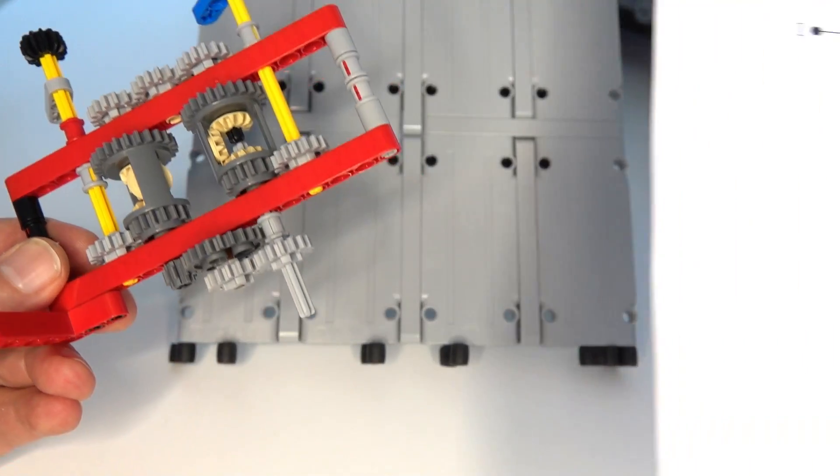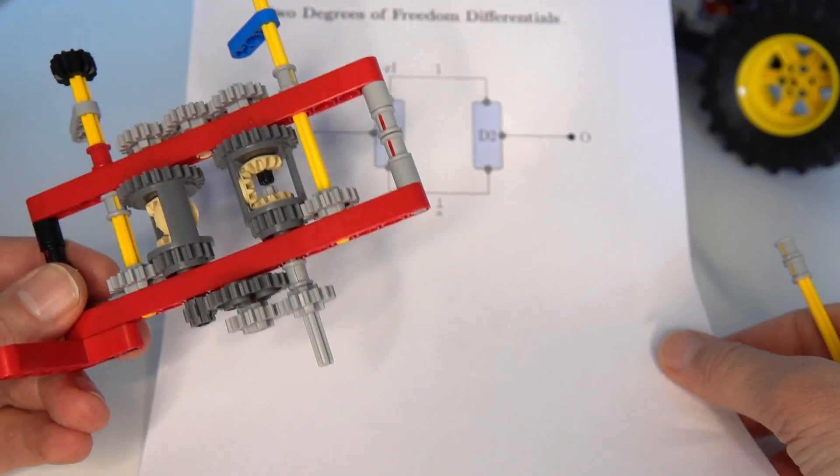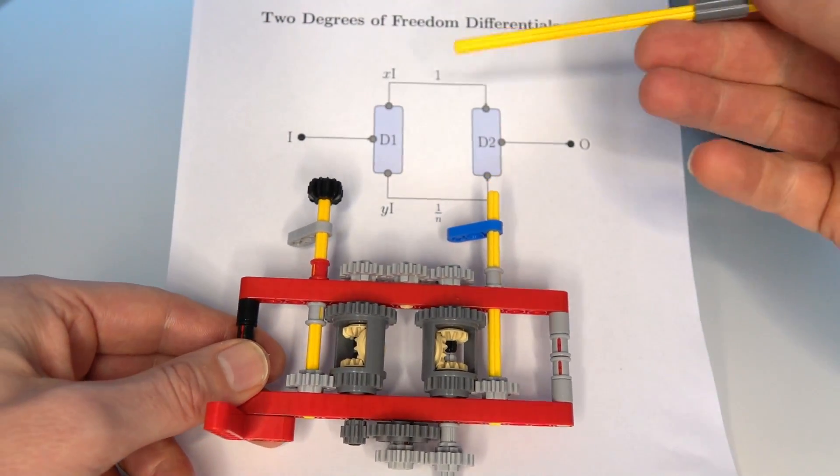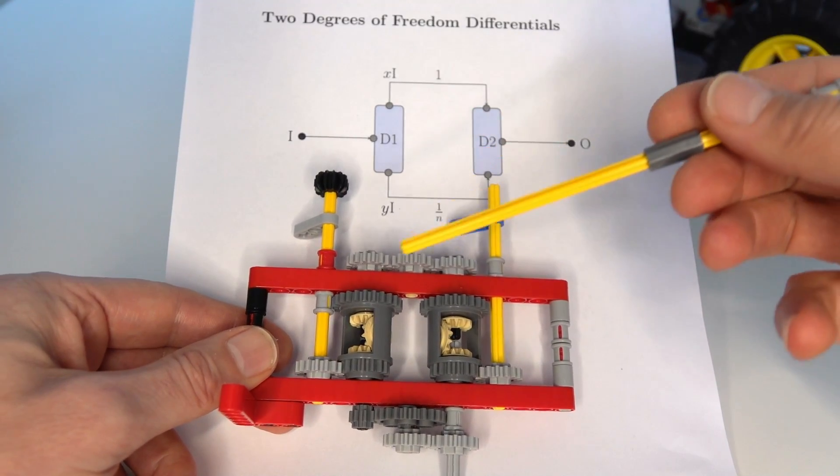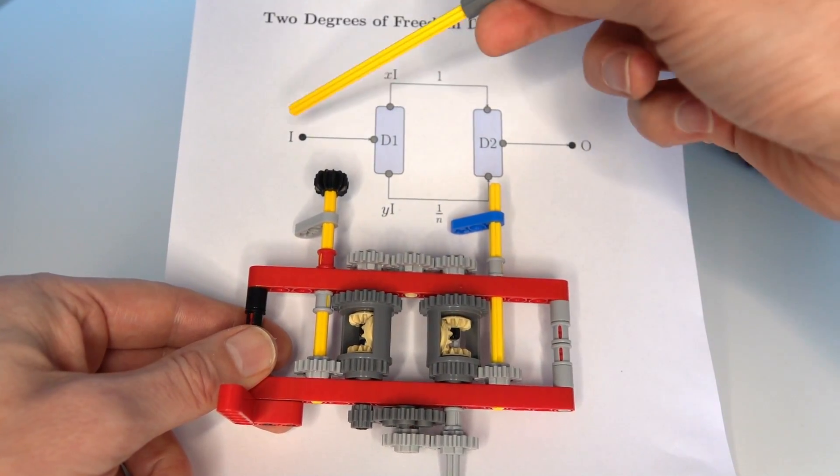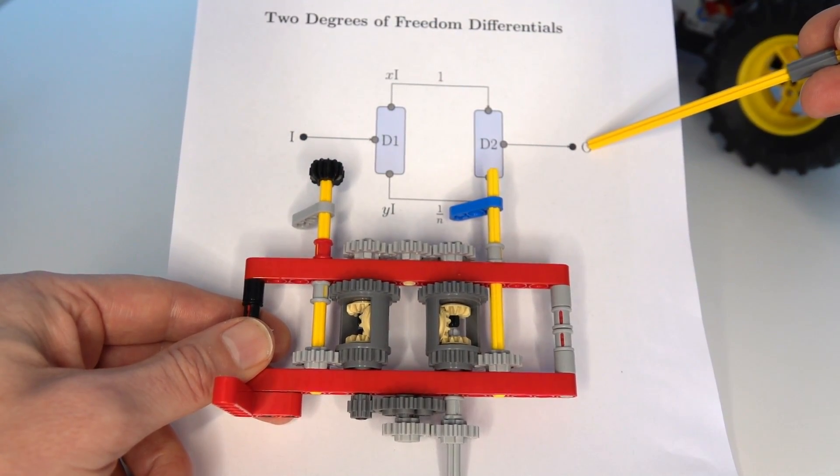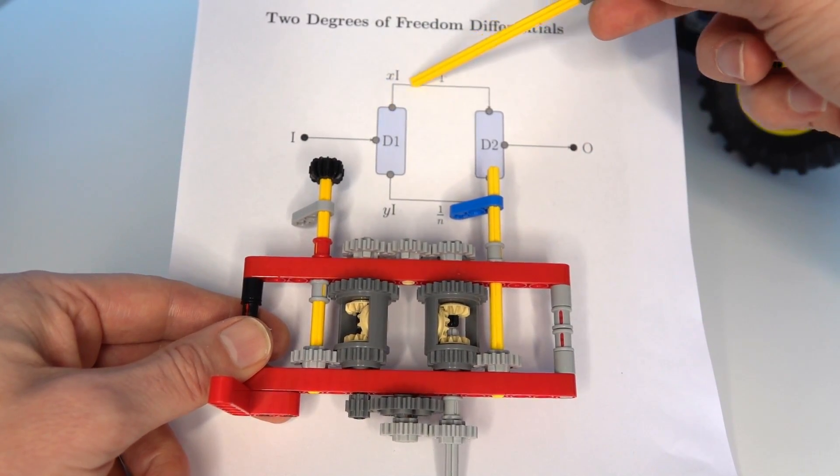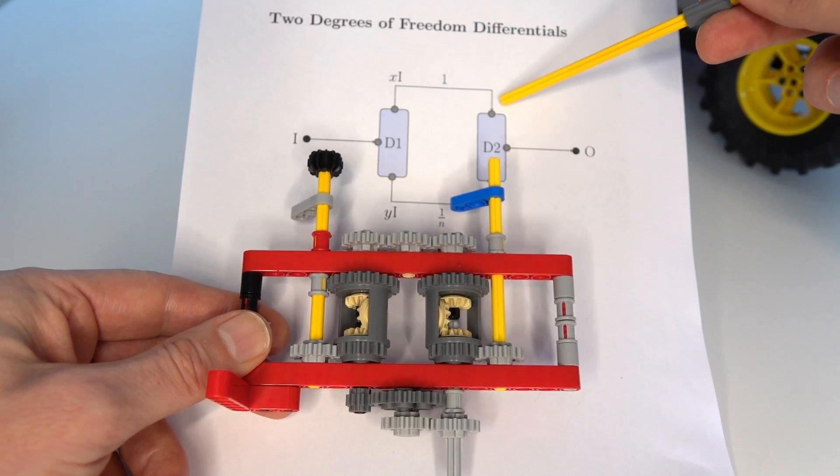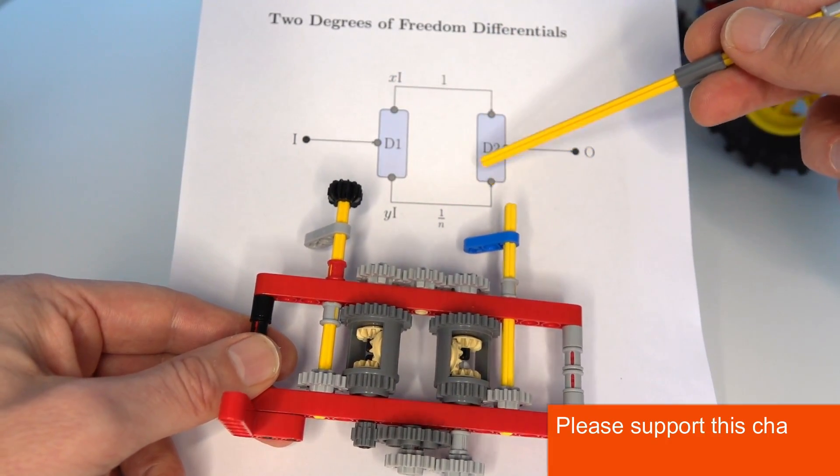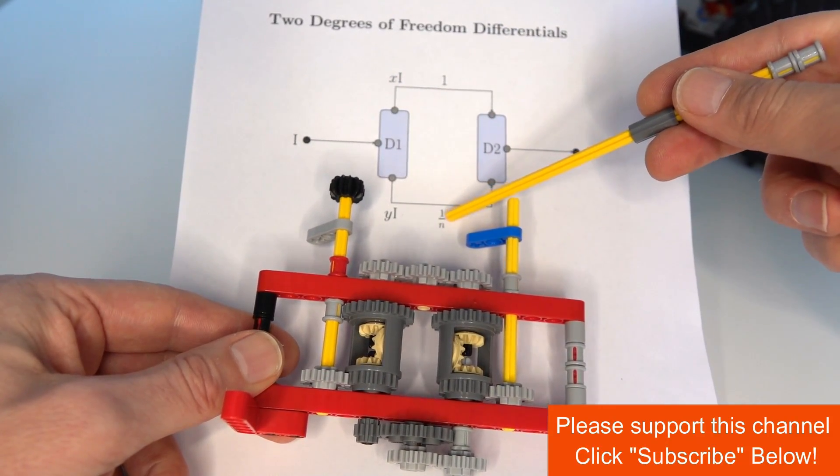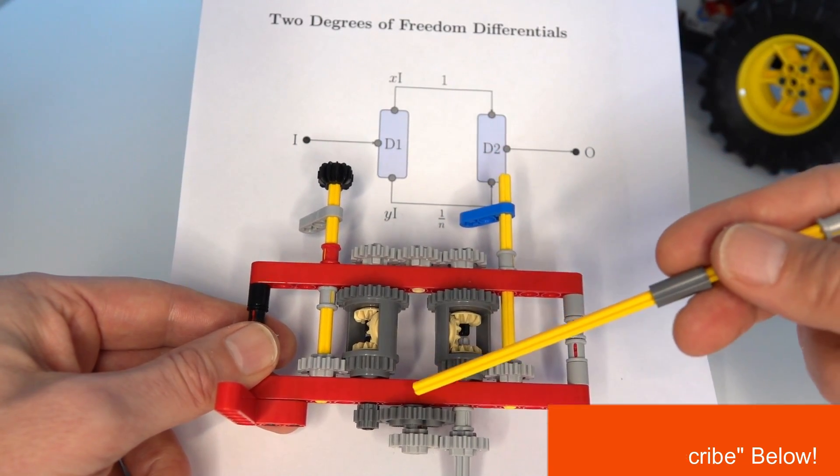So in order to analyze this configuration what I've done is I've drawn it on a diagram. So what we have here is D1 and D2 representing the two differentials. We've got our input over here represented by I, our output over here represented by O, and then we've got that top path where we've got that gearing ratio of 1 and the bottom path I have generalized that to be a 1 over N gearing ratio. In this case we've got a 1 over 3.